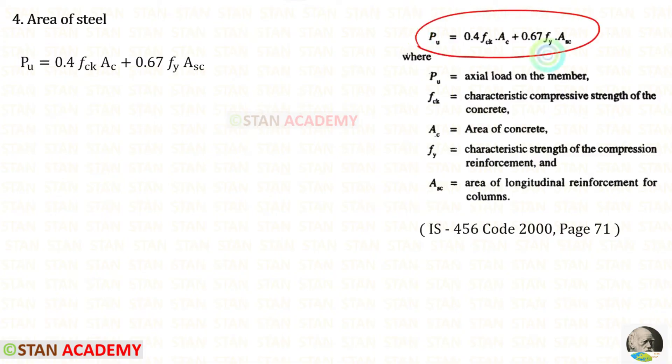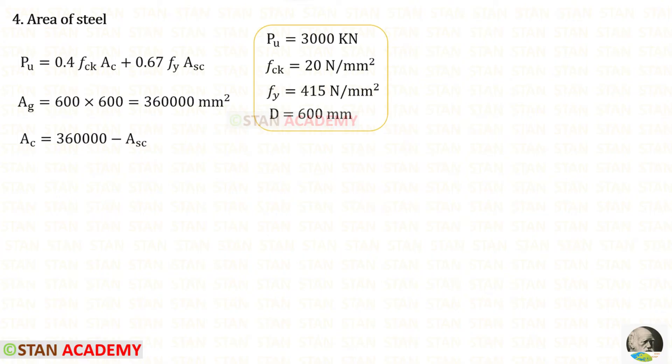Now let us use this formula and find Asc. First let us find the gross area. We know that it is a square column having the size as 600 into 600, so for the area we will get this. We know that the gross area is equal to area of the concrete plus area of the steel, so Ac will be Ag minus Asc.